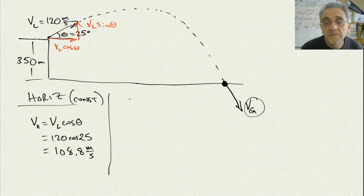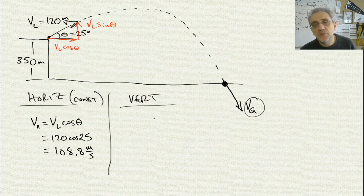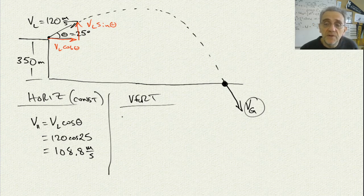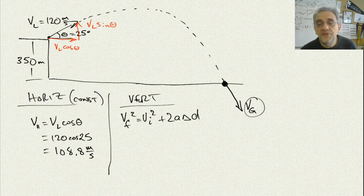Now let's do the vertical. For the vertical, we're not going to be using time, because if we do solve for time in this situation, it's going to end up being a quadratic formula, because the delta D from the initial position to the final position is not zero. But we don't need that, because we don't need time. All we need to do is figure out the final velocity, so let's use the kinematics equation that doesn't have time in it.